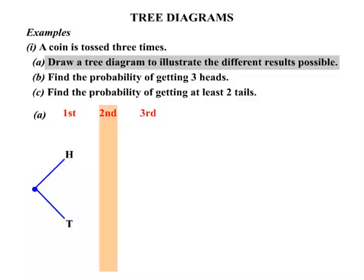Now the second throw. Well let's say our first throw was a head. On the second throw we could get a head or a tail. If on the other hand our first throw was a tail, our second throw could also be a head or a tail.